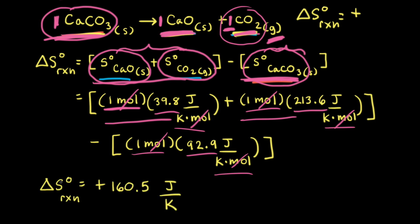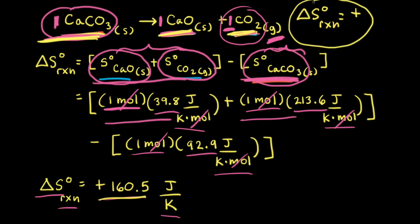After doing the math, the standard change in entropy for this reaction is positive 160.5 joules per Kelvin. Therefore, the decomposition of one mole of calcium carbonate to form one mole of calcium oxide and one mole of carbon dioxide involves an increase in entropy, just as we predicted.